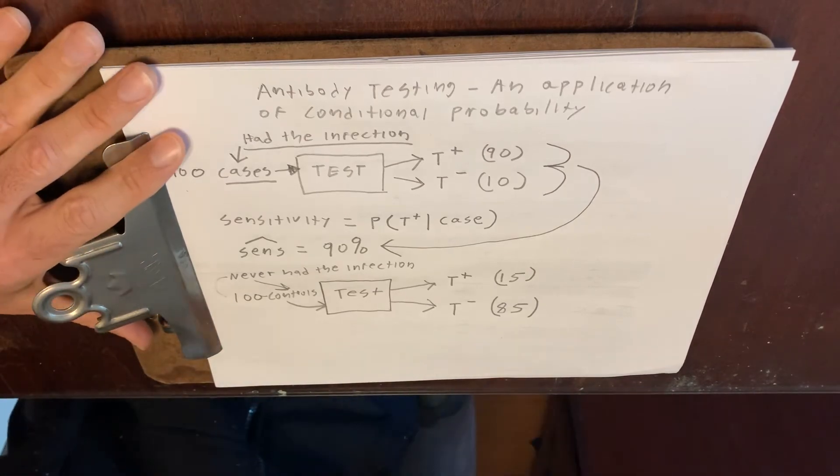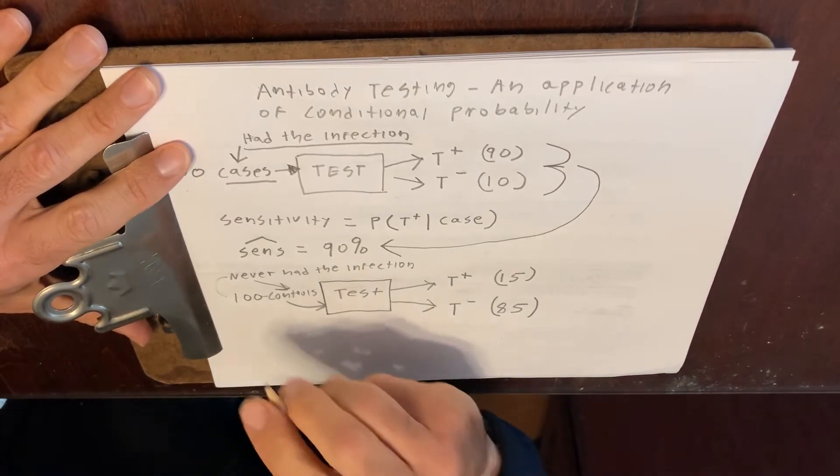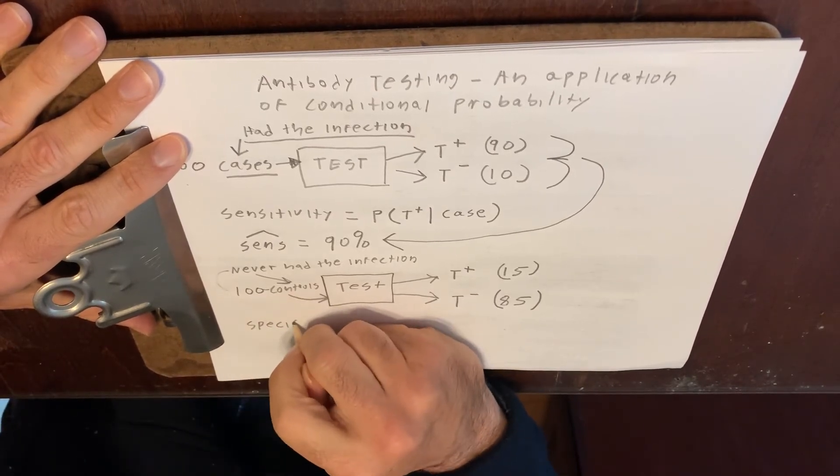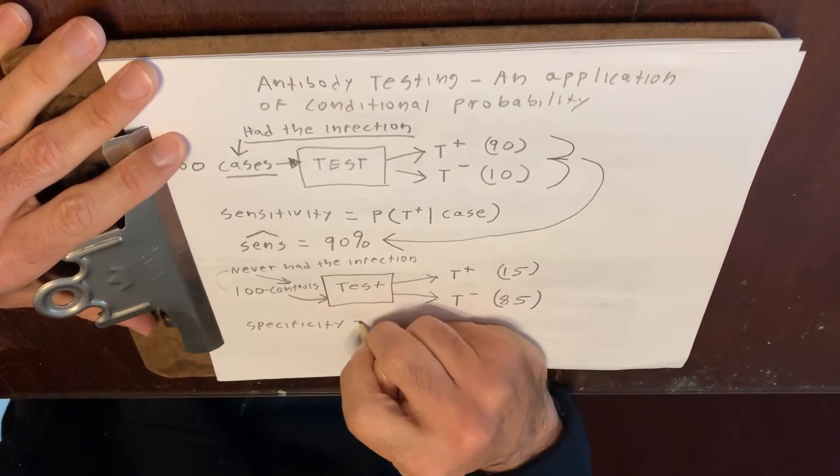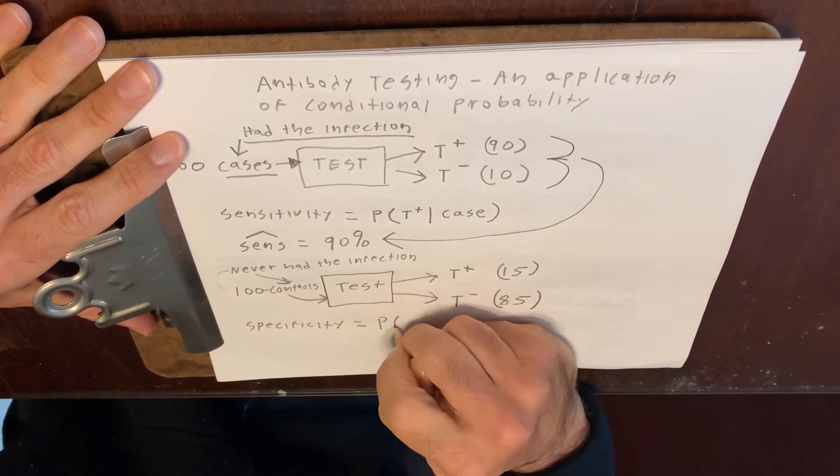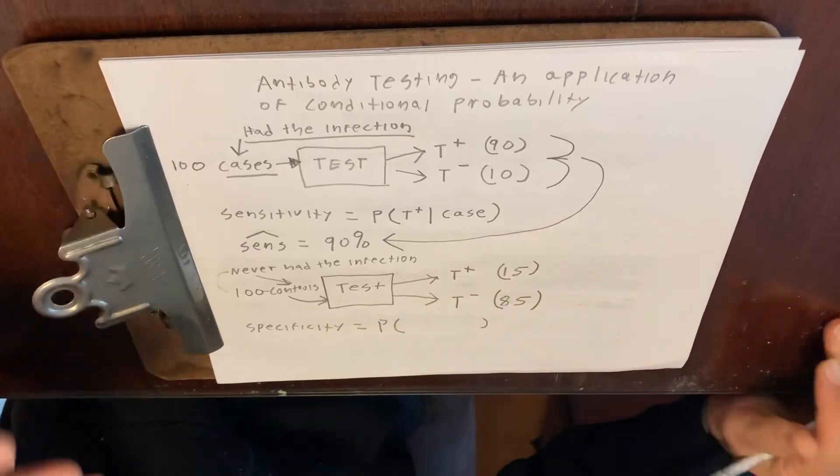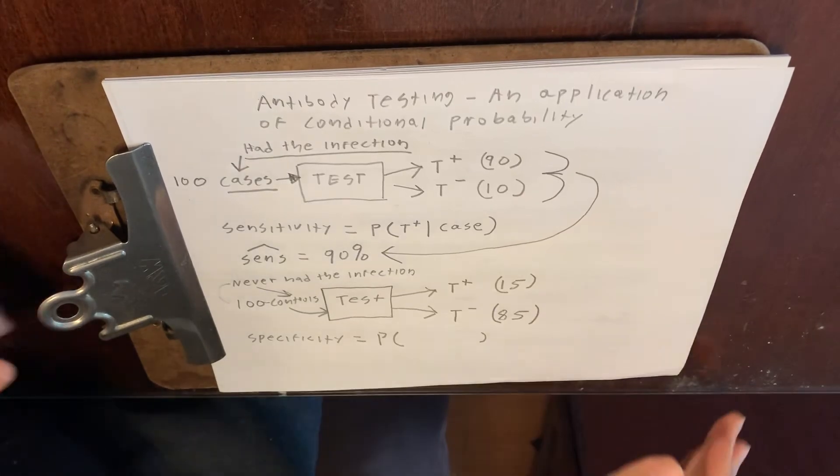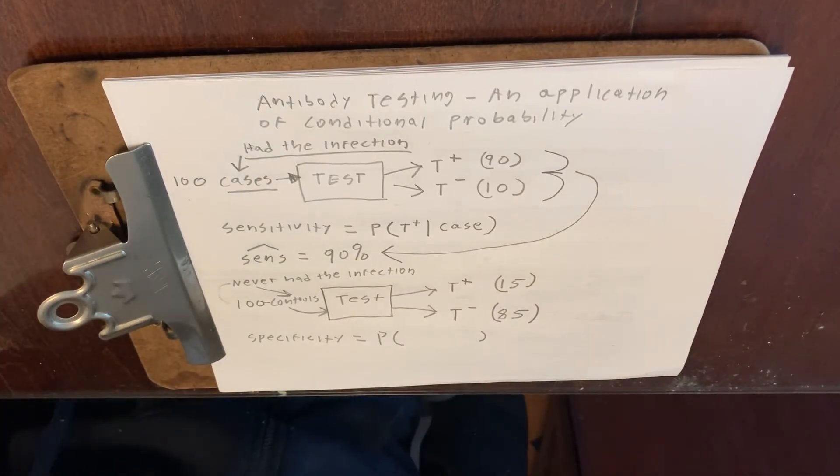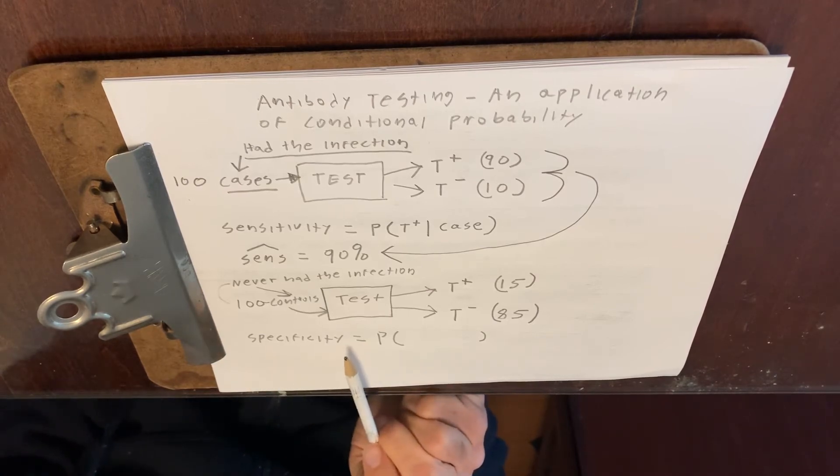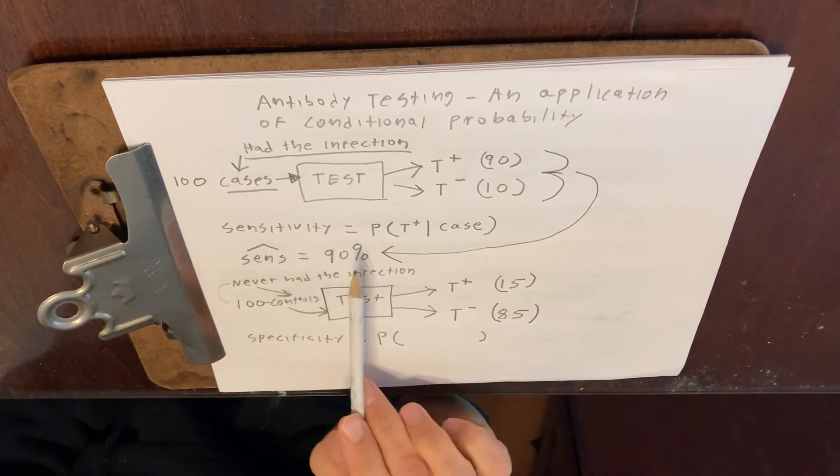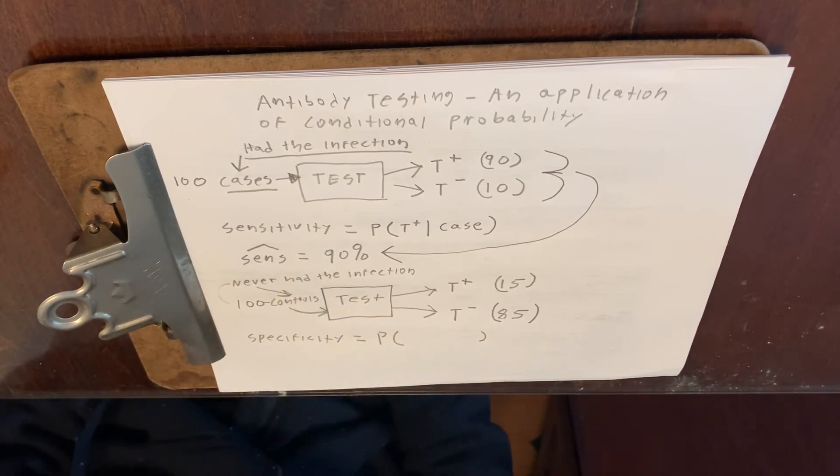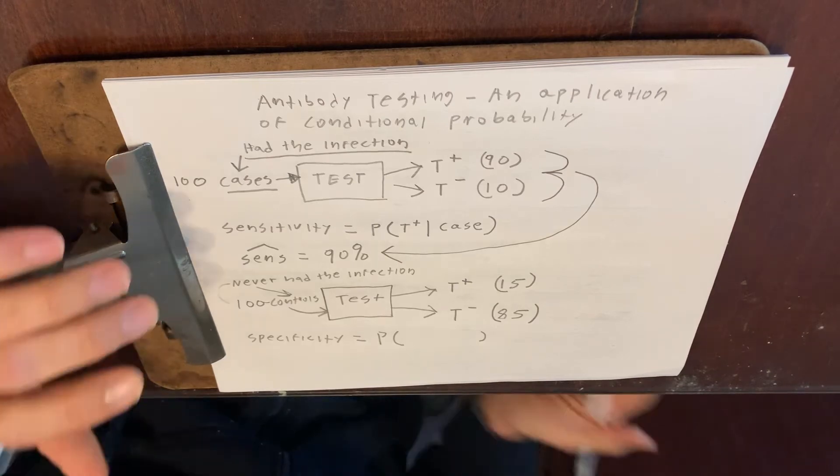So it turns out that we have another measure of accuracy of the test called the specificity. Now, the specificity is a conditional probability. Can you figure out, maybe pause the video, can you figure out what do you think the formulation of the specificity of the test would be if it had a similar idea to sensitivity? Pause the video, I think. Welcome back. Okay, so I'll tell you.